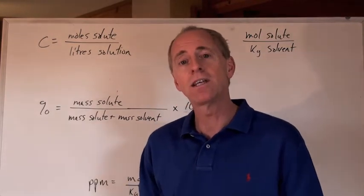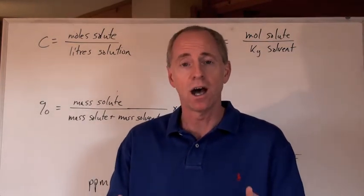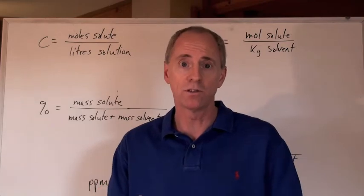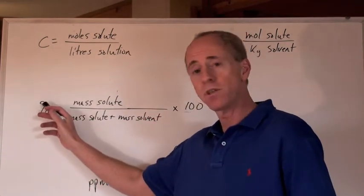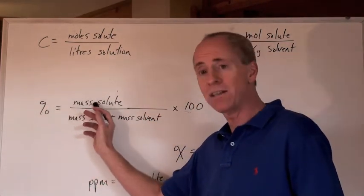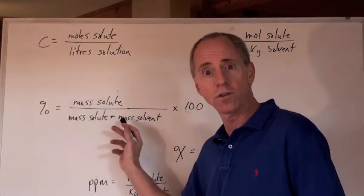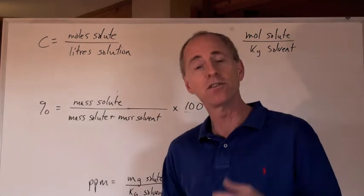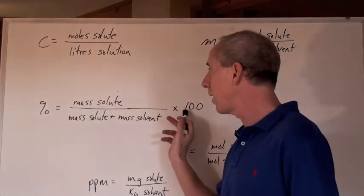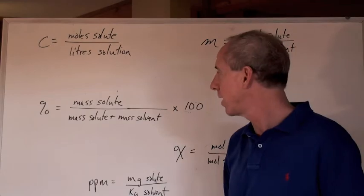You might be asked to calculate the mass percent of a solute in a given solution. Mass percent equals the mass of the solute divided by the mass of the solute plus the mass of the solvent, because those two masses added together equal the mass of the solution. When you multiply that by 100, that's when you get the percent.